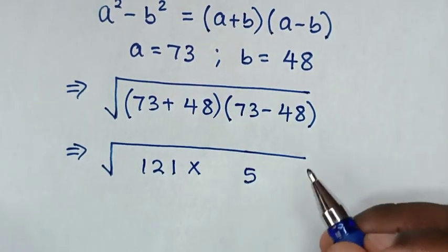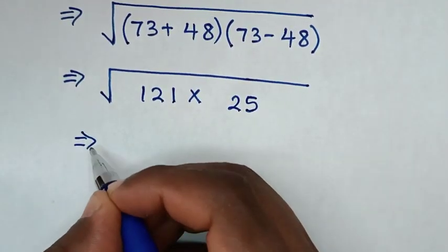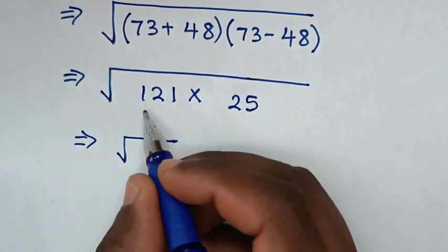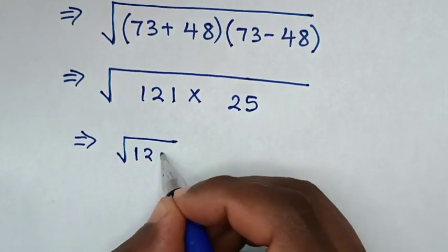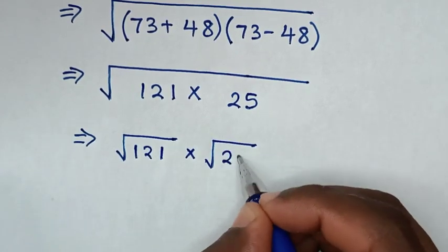of 25. Then it will be square root of 121 times square root of 25.